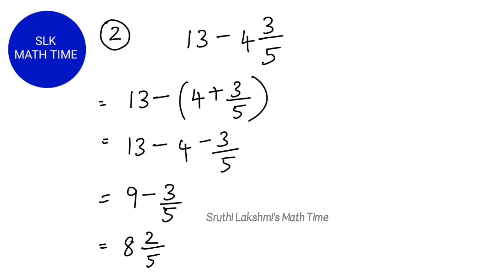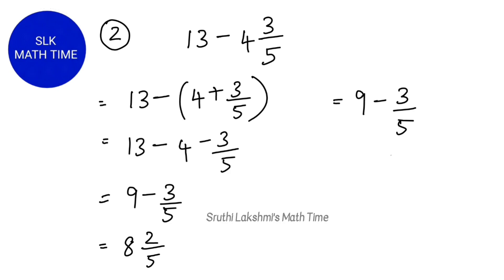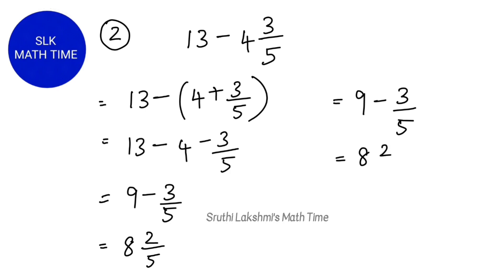Now let's look at the trick. We directly do 13 minus 4, which is 9, and we write down the 3 by 5 as it is — so 9 minus 3 by 5. Now, 1 less than 9 is 8, so we write down 8. Then we find the difference between the denominator and the numerator, which is 5 minus 3 equals 2. So 8 and 2 fifths is the answer.